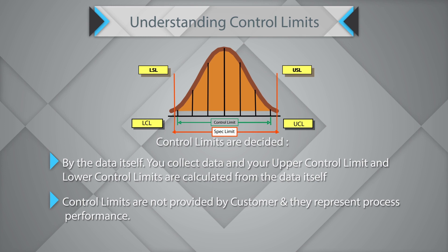Control charts only use control limits. Specification limits are not an inbuilt capability of control charts — you may artificially introduce specification limits, but they are not built in.